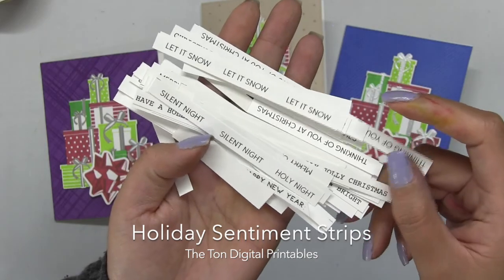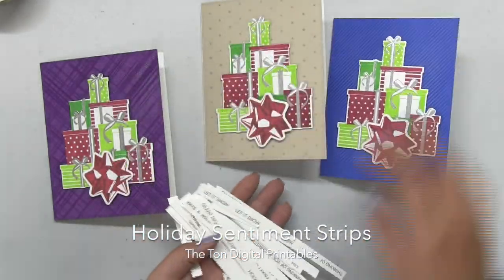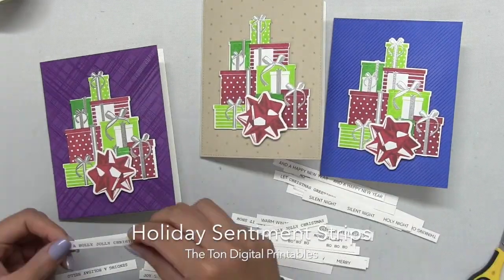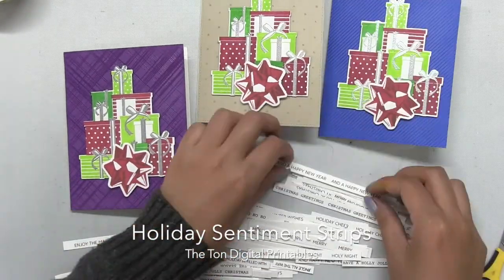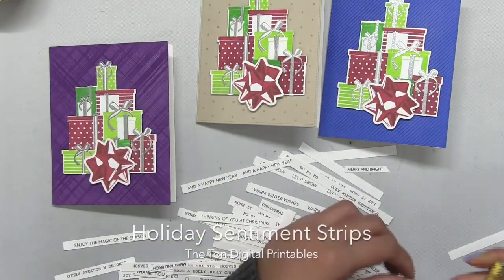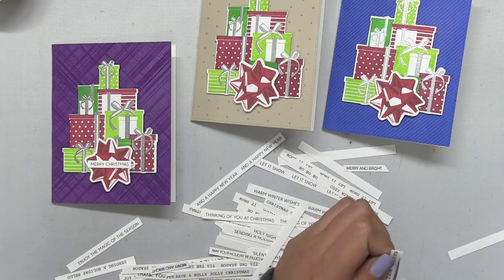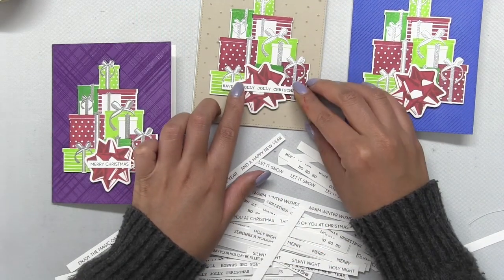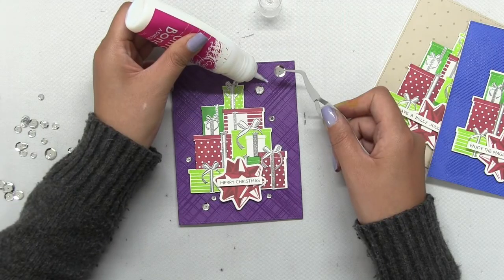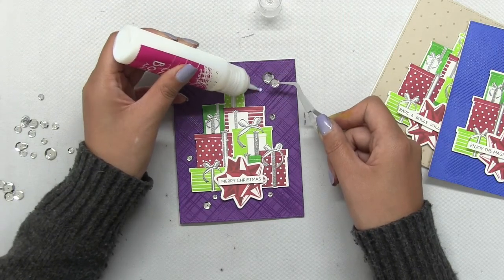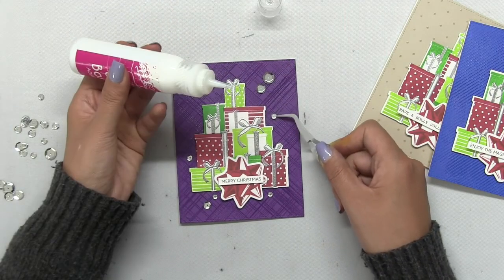For my sentiment, I'll use our holiday sentiment strips that I created. They're digital printables. I printed off one of each, the modern font and the type font. I cut all the strips, and I have a bunch waiting to be used on my holiday cards. I chose three and popped them up on each of my cards right on top of the bow.